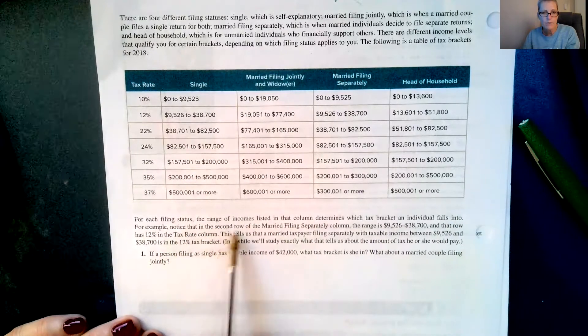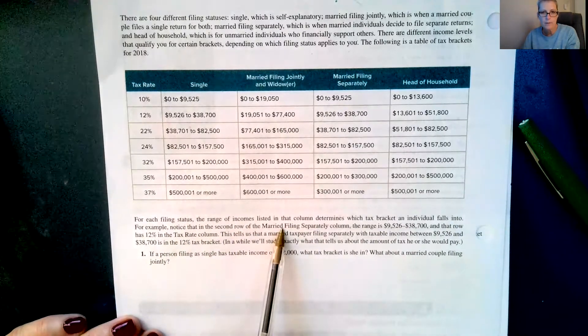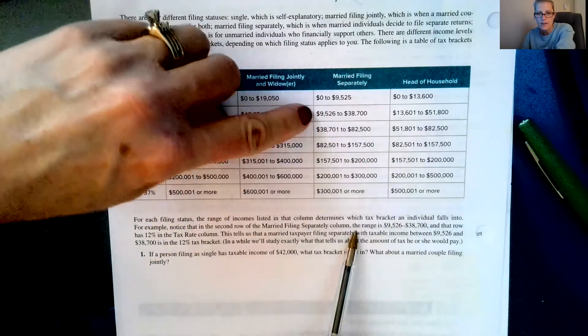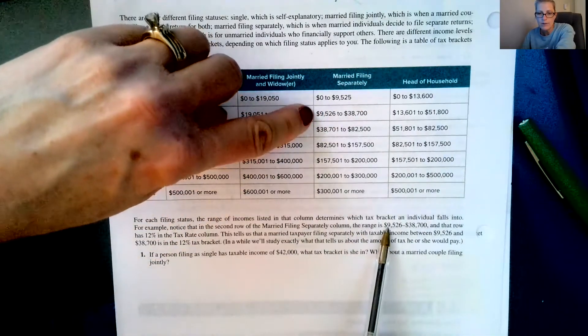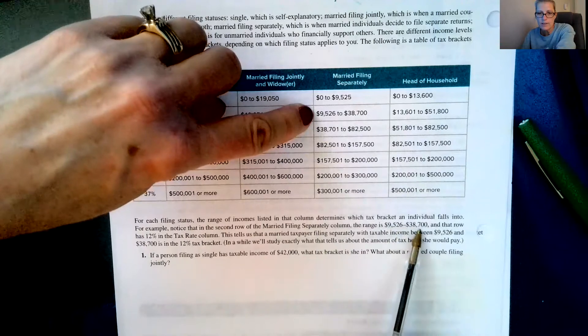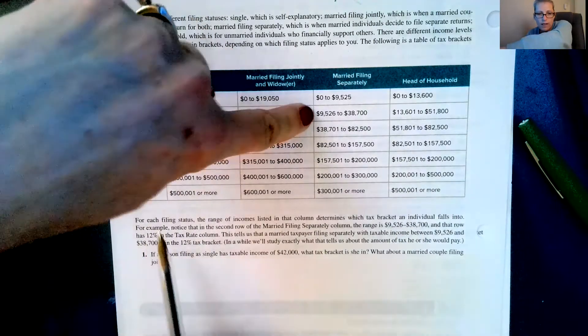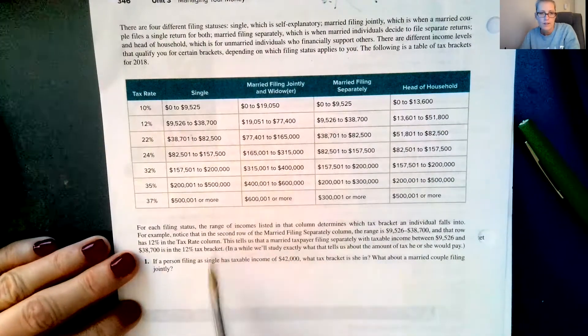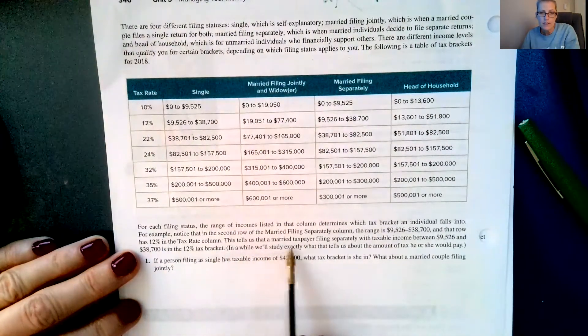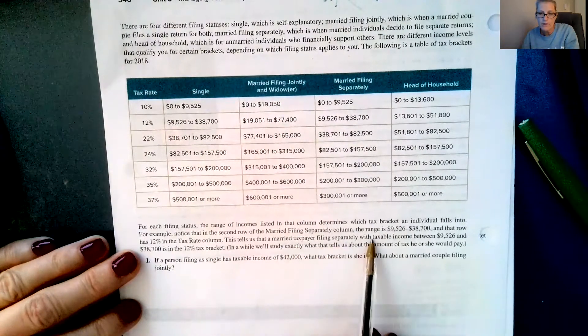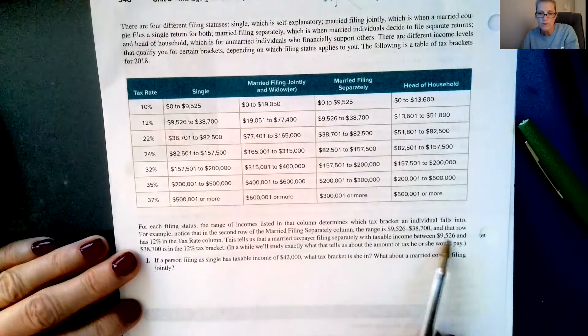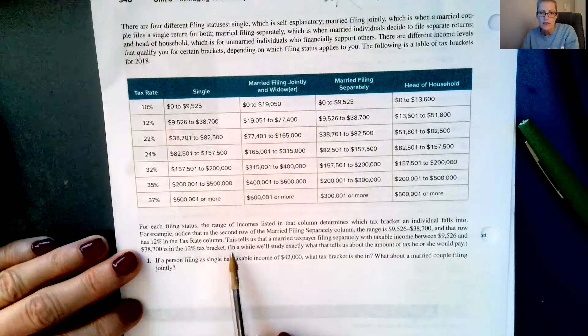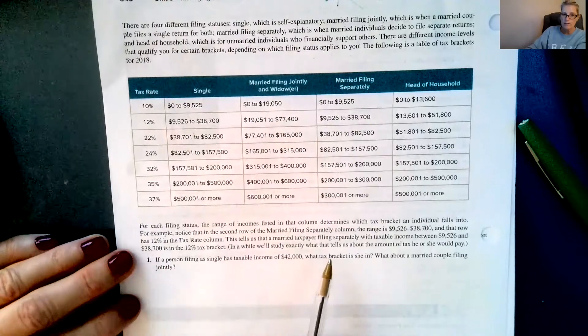For each filing status, the range of incomes listed in that column determines which tax bracket an individual falls into. For example, notice in the second row of the married filing separately column right here, the range is $9,526 to $38,700, and that row has 12% in the tax column over here.